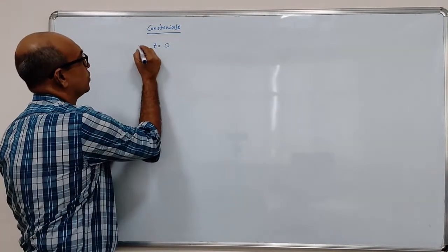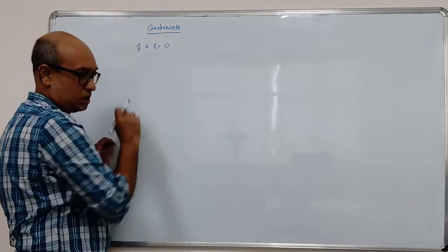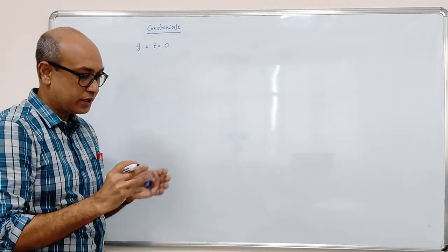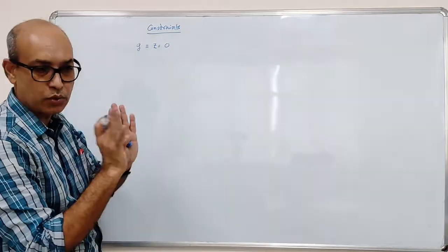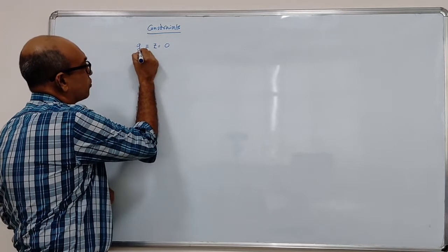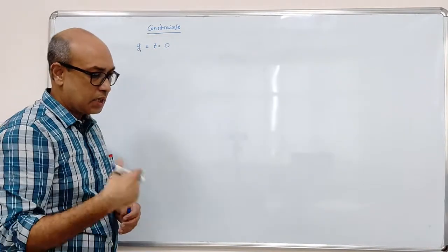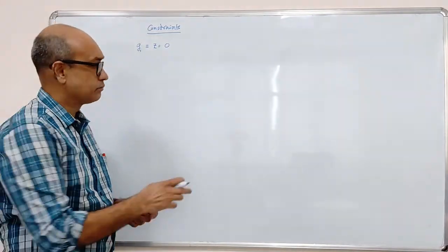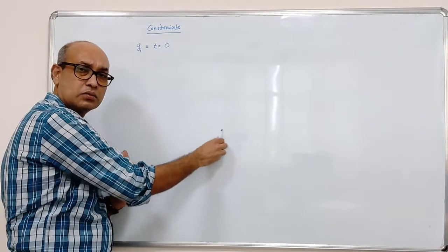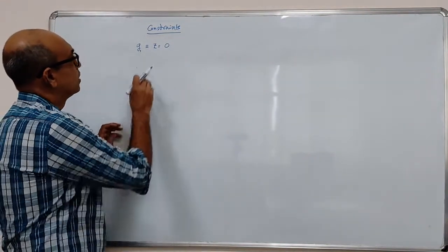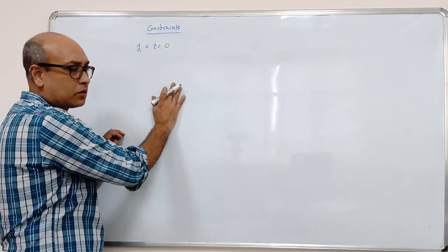Such relation, we can denote it like g is a notation for that equation. g refers to z equal to 0 equation. Or we can give subscript also, g1 is this. This equation, does it involve time? It does not involve time.